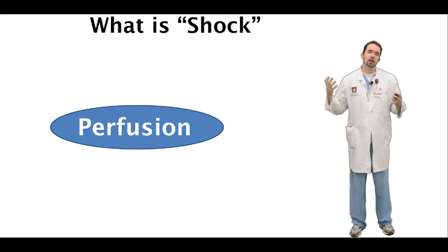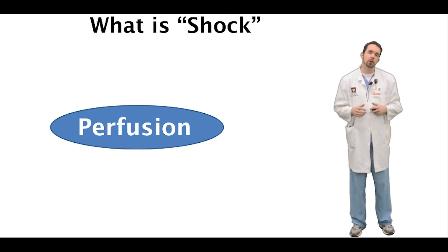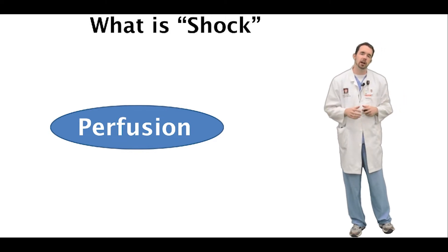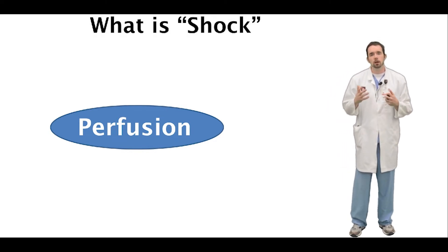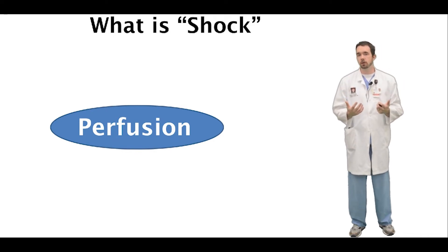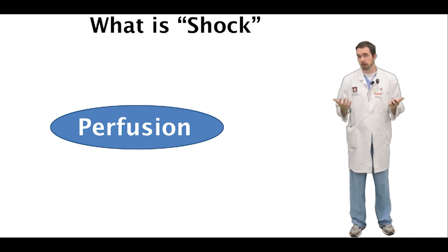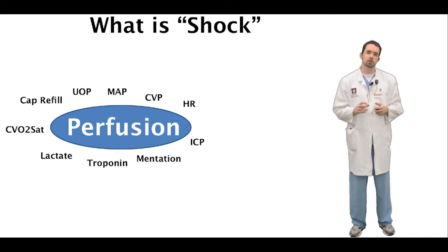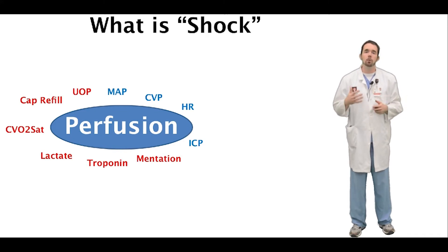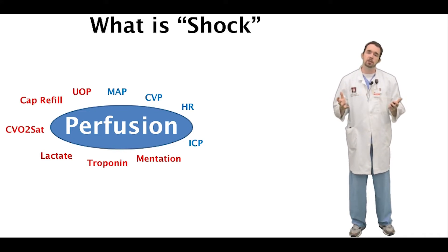Here I have outlined in red a lot of the different clinical parameters we'll be watching out for in these types of patients. For starters, there are blood tests that we can order to give us information about perfusion to organs of the body — for example, the troponin, which is elevated in patients that are not perfusing their heart.